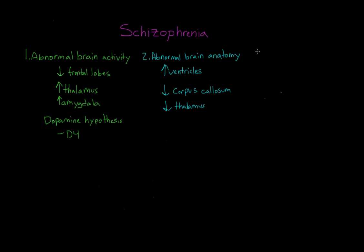Another thing we have to talk about in terms of the causes of schizophrenia are genetic factors. We actually know that schizophrenia has a very strong genetic component. Normally, someone's chances of developing schizophrenia are about 1 in 100. But when someone has a sibling or a parent with the disorder, those chances increase dramatically — specifically, to 1 in 10.